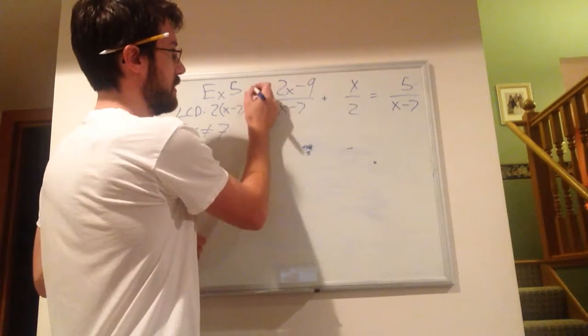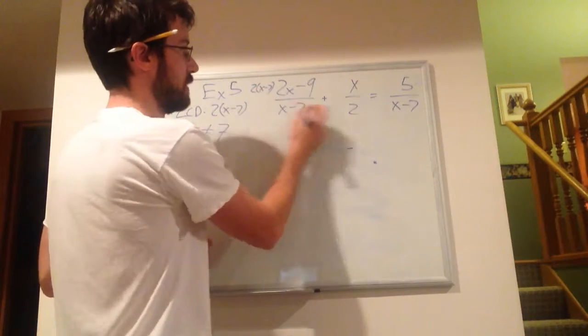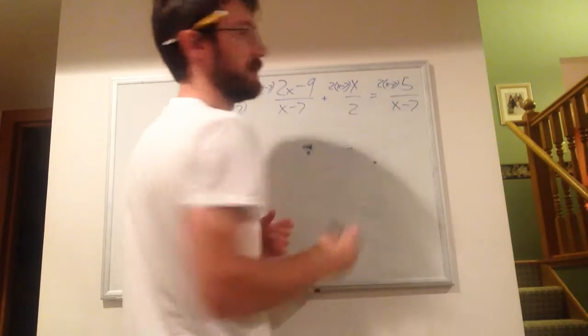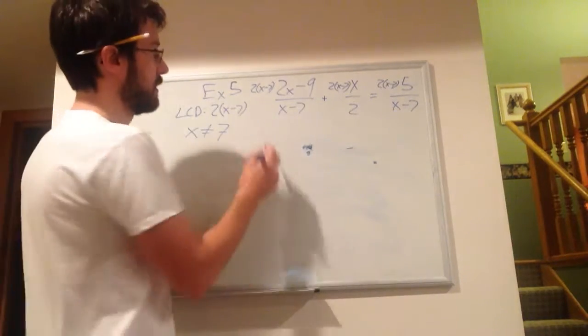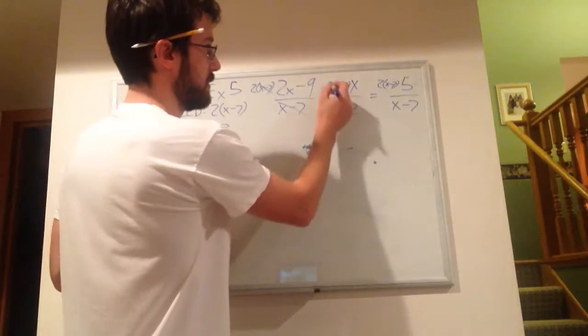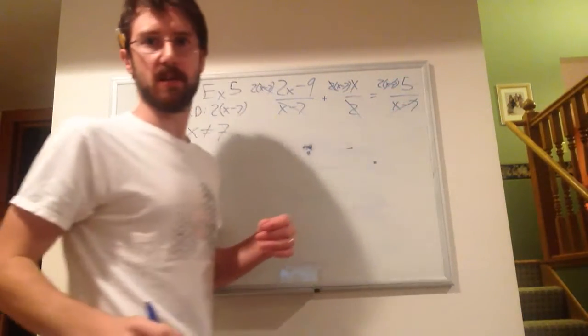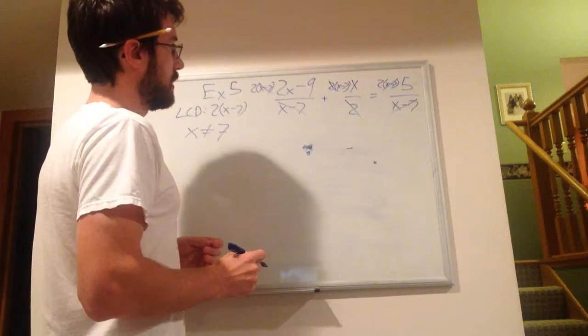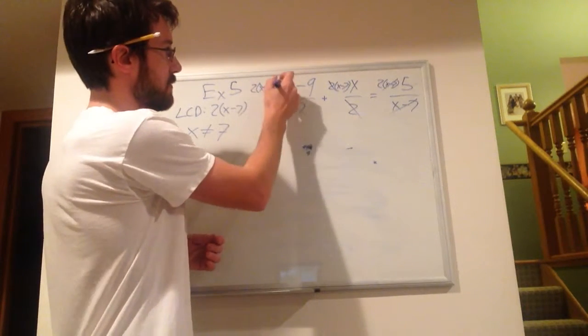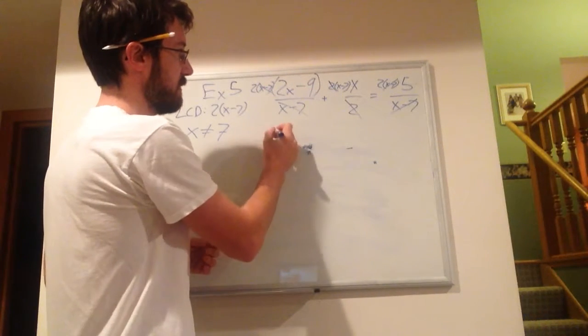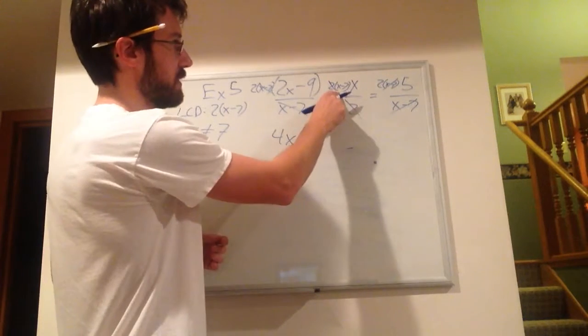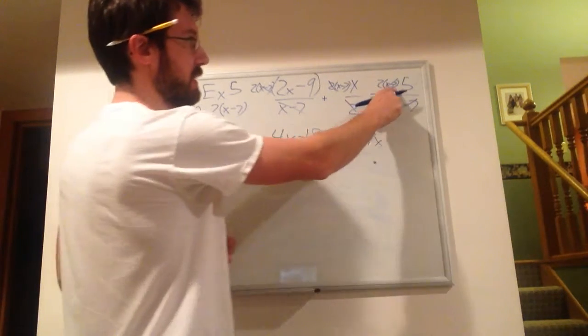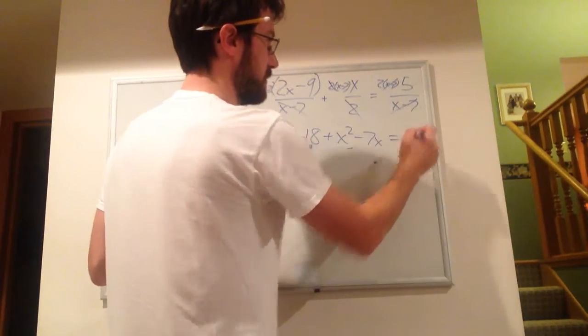Alright, so this one, I'm going to multiply it by a 2x minus 7. I'm going to multiply this one by a 2x minus 7, and I'm going to multiply this one by a 2x minus 7, and then see what cancels out. The x minus 7s cancel out here, the 2s cancel out here, and the x minus 7s cancel out here. Hopefully that comes through okay. It seems kind of small. Alright, this side, the 2 gets multiplied by all the stuff on top here, so that's going to be a 4x minus 18. Over here, the x minus 7 gets multiplied by the x, so that's an x squared minus 7x, and here, we've got the 2 and the 5 left, so that's equal to 10.